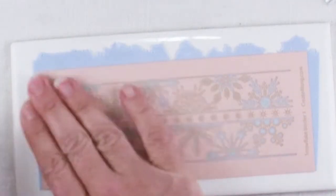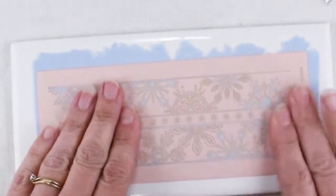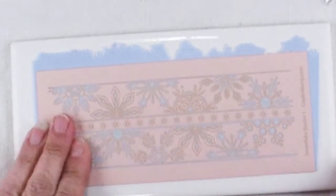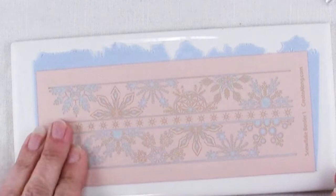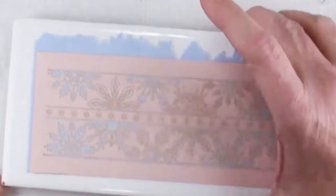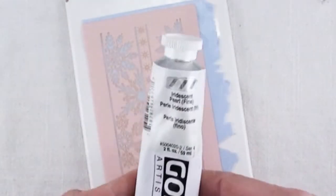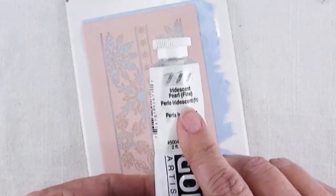So we'll just burnish down our silkscreen so that we get a nice image. I just love this snowflake border. It's so pretty and to go with the kind of frosty wintry theme I'm going to use some iridescent pearl paint by Golden.